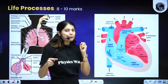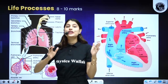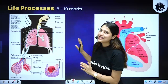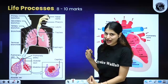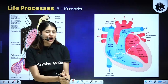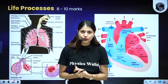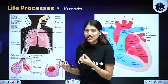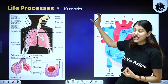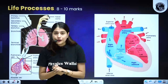We are going to look into it chapter by chapter. The very first chapter, which is also the backbone of your biology exam, is none other than Life Processes. This individual chapter consists of a whopping 8 to 10 marks. So what are the topics which we cannot miss from this chapter?